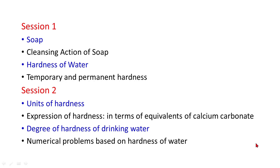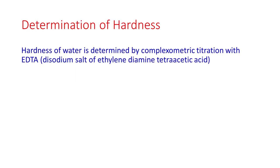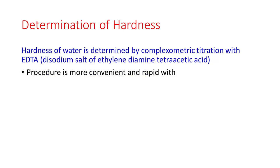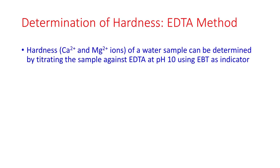Hardness of water is determined by complexometric titration with EDTA. EDTA is ethylenediamine tetraacetic acid, and its disodium salt is taken. The procedure is more convenient and rapid with greater accuracy. Hardness-producing ions — that is, calcium and magnesium ions — in a water sample can be determined by titrating the sample against EDTA at pH 10 using Eriochrome Black T as indicator.